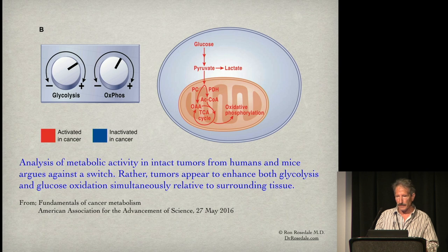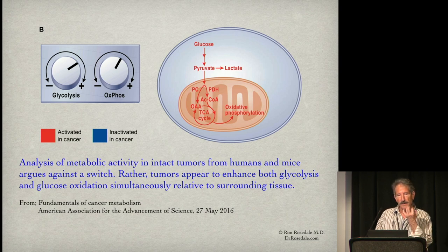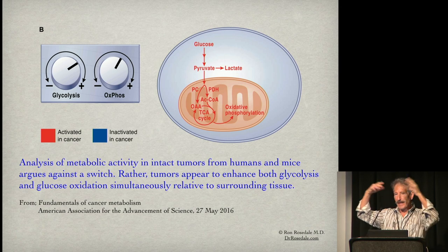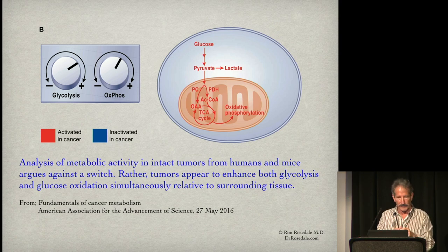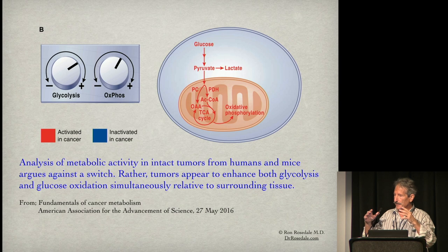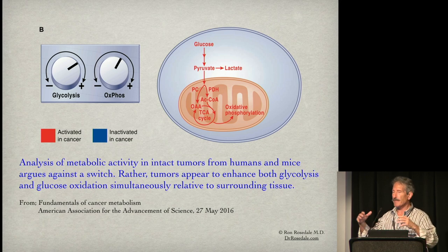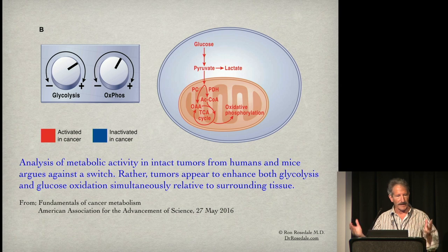Not just for energy — the components that glycolysis makes via the pentose phosphate pathway are critical. The pentose phosphate pathway is a component manufacturing pathway off glycolysis. Cancer doesn't even use glycolysis primarily for ATP — it uses it to make components: ribose to make genes, NADPH to make fatty acids, and glutathione to prevent oxidative damage.